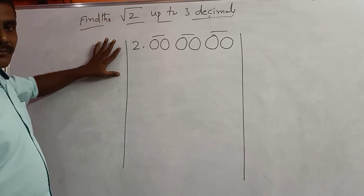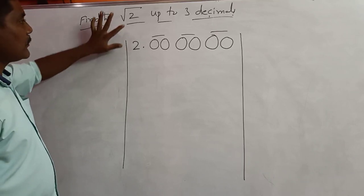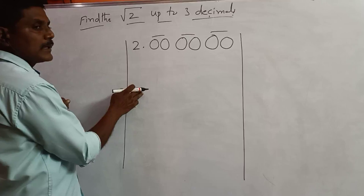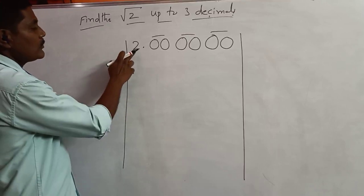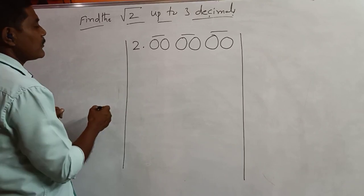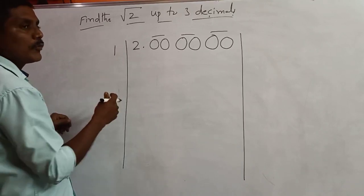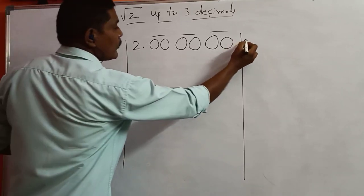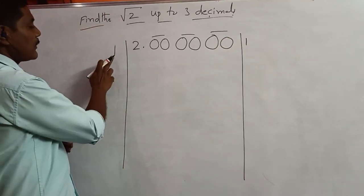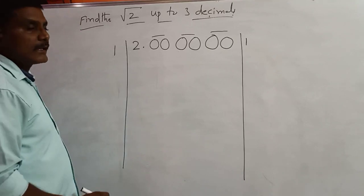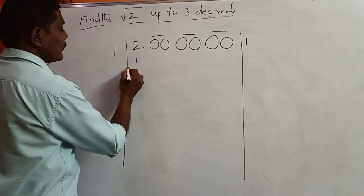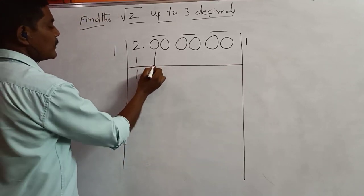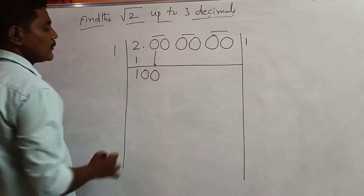This is the process to find the square root of an irrational number; I take here 2. If we multiply a number by itself which comes up to 2, we take that number. 1 into 1 is 1. If we take 2 into 2 that's 4, which is not possible here. So I take 1 into 1, write 1 here, and 1 is subtracted: 2 minus 1 equals 1. Now put down this pair, which equals 100.